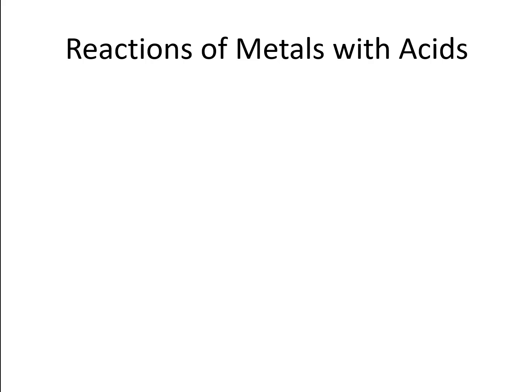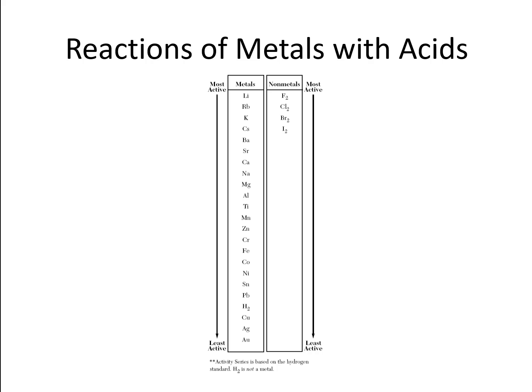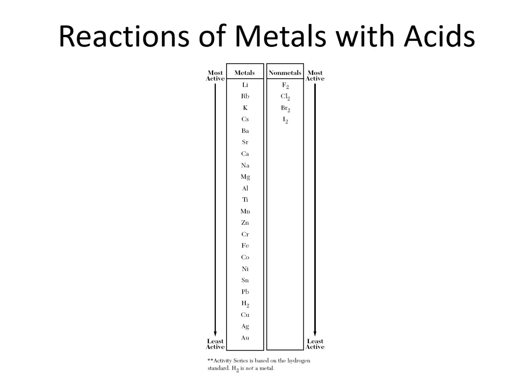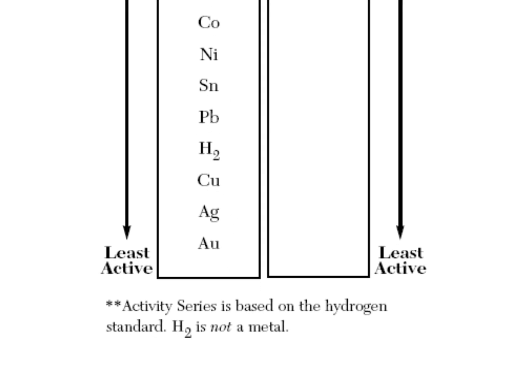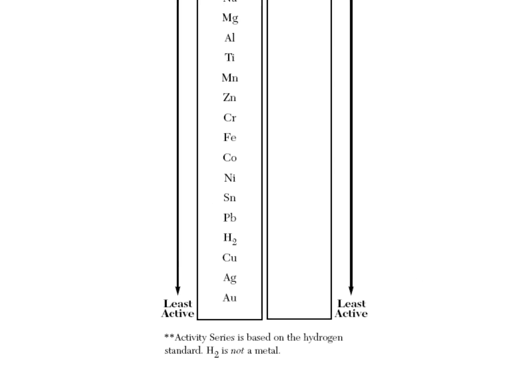If you remember back when we talked about Table J, one of the things we pointed out was that hydrogen was on Table J on our reference table, kind of down toward the bottom, just above copper, silver, and gold. And we talked about the fact that metals would potentially react with things that contained hydrogen, and that certainly includes our acids. So let's take a look at this in a little bit more depth.